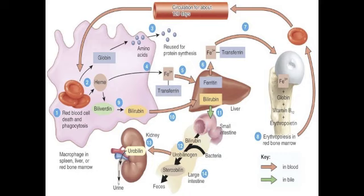The iron ion associates with the plasma protein transferrin, a transporter for the iron ion in the bloodstream. In step 5, in muscle fibers, liver cells, and macrophages of the spleen and liver, the iron ion detaches from the transferrin and attaches to an iron storage protein called ferritin. In step 6, on release from a storage site or absorption from the digestive canal, the iron ion reattaches to the transferrin. In step 7, the iron ion-transferrin complex is carried to the red bone marrow, where the red blood cell precursor takes it up through receptor-mediated endocytosis for use in hemoglobin synthesis — iron is needed for the heme portion and amino acids are needed for the globin portion. Vitamin B12 is also needed for the synthesis of hemoglobin.